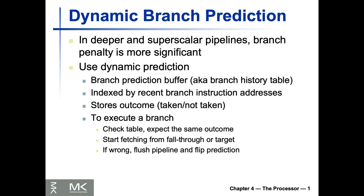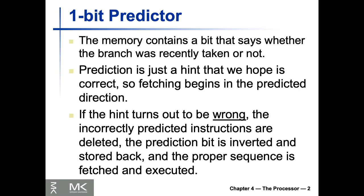If something goes wrong when you're issuing multiple instructions in a very deep pipeline, you might lose performance even more than with a simple pipeline. There are some very simple and more advanced techniques to look at. The first one uses one bit as a branch predictor — that's why it's called a one-bit branch predictor.